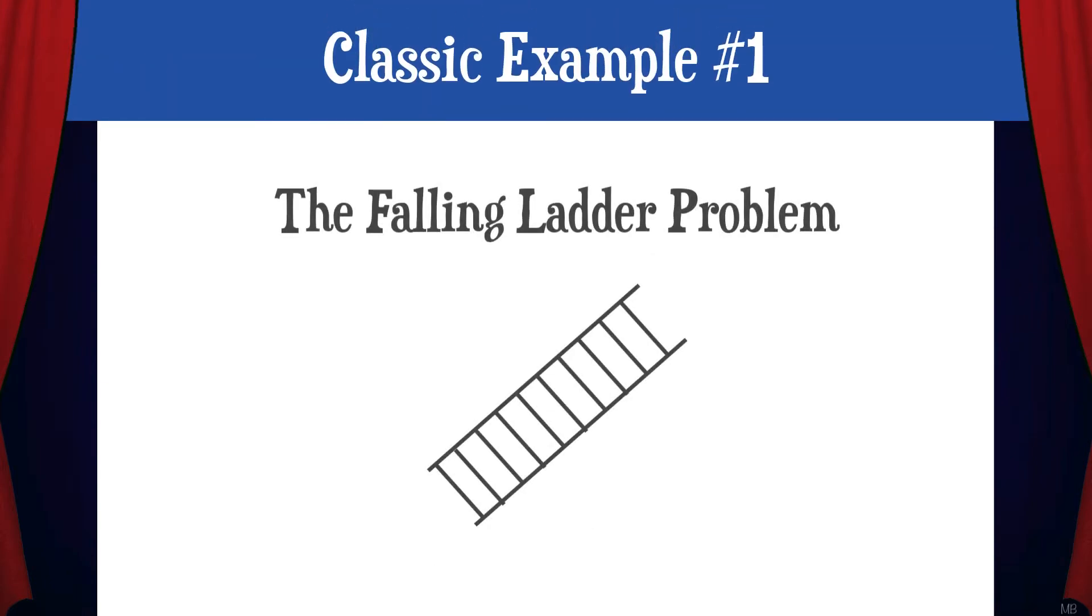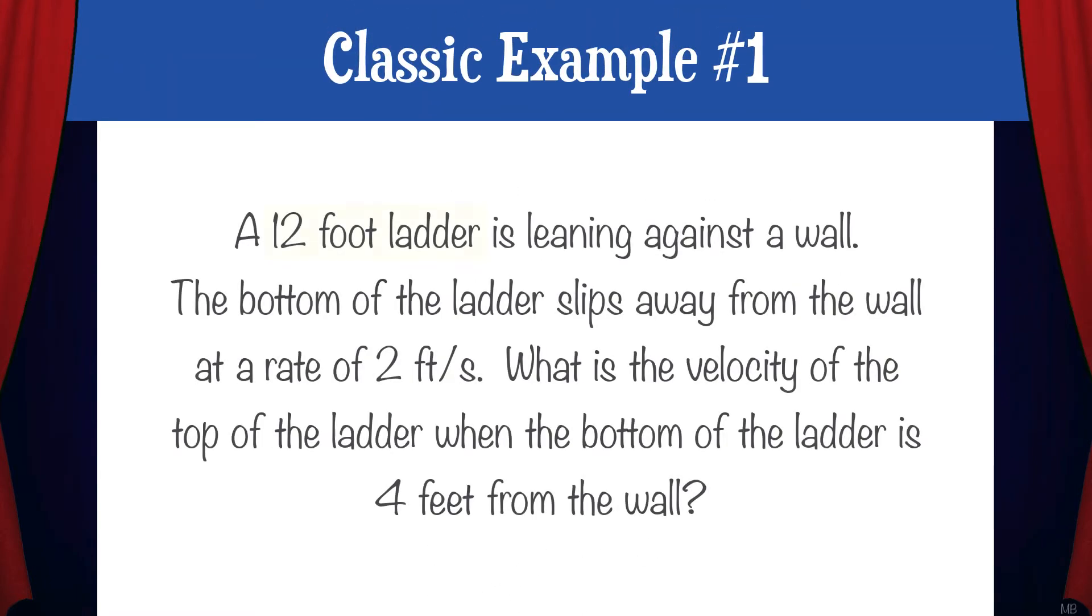And this brings us to classic example number one, the falling ladder problem. A 12-foot ladder is leaning against a wall. The bottom of the ladder slips away from the wall at a rate of 2 feet per second. What is the velocity of the top of the ladder when the bottom of the ladder is 4 feet from the wall?